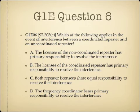Question 6. Which of the following applies in the event of interference between a coordinated repeater and an uncoordinated repeater? A, the licensee of the non-coordinated repeater has a primary responsibility to resolve the interference; B, the licensee of the coordinated repeater has primary responsibility to resolve the interference; C, both repeater licensees share equal responsibility to resolve the interference; or D, the frequency coordinator bears primary responsibility to resolve the interference.